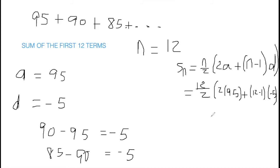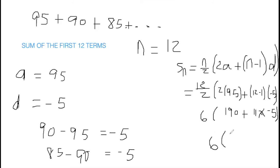We have a lot of calculations here. Divide 12 by 2 to get 6. 2 times 95 gives 190. Then 12 minus 1 gives 11, times negative 5 equals negative 55. So we have 6 times open bracket 190 minus 55. Working inside the bracket first: 190 minus 55 equals 135, then multiplied by 6 gives us 810.